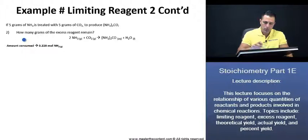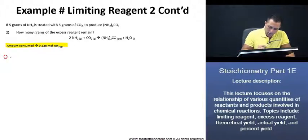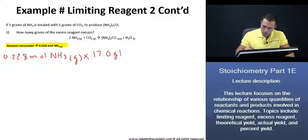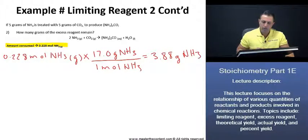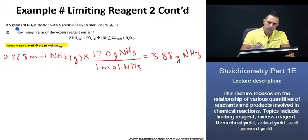Picking up where we left off, we have 0.228 moles of ammonia that were consumed. Using the molar mass of 17 grams per mole of ammonia, that gives us 3.88 grams of ammonia consumed. This tells us the amount of ammonia being used up. Now that we know that, we can subtract it from the initial 5 grams to get the amount of ammonia remaining in grams.